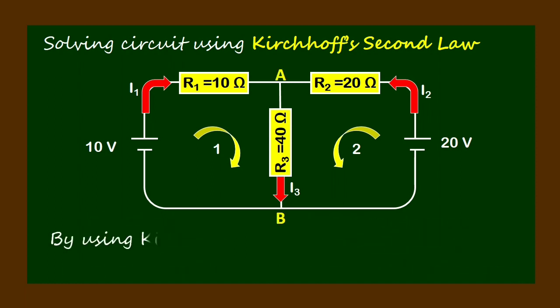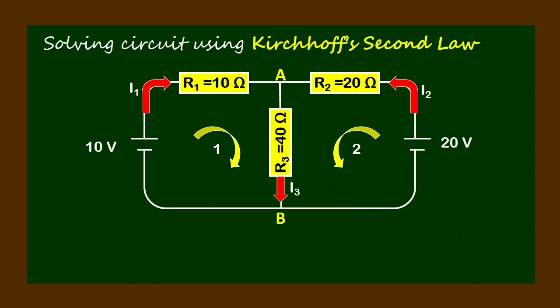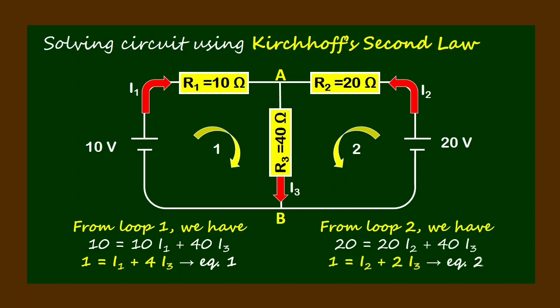By using Kirchhoff's first law at junction A to junction B, we get I1 plus I2 equals I3. By using Kirchhoff's second law: from loop 1, 10 equals 10·I1 plus 40·I3, which simplifies to 1 equals I1 plus 4·I3. From loop 2, 20 equals 20·I2 plus 40·I3, which simplifies to 1 equals I2 plus 2·I3. From loop 3, 10 minus 20 equals 10·I1 minus 20·I2, which simplifies to 1 equals negative I1 plus 2·I2.